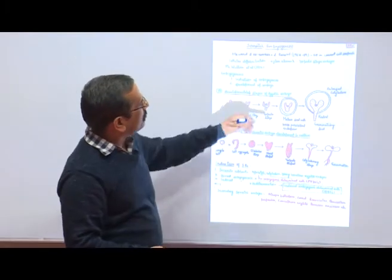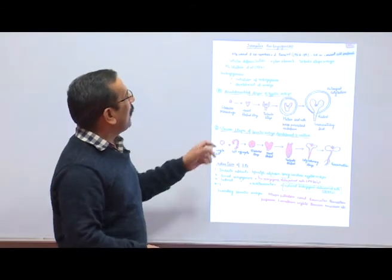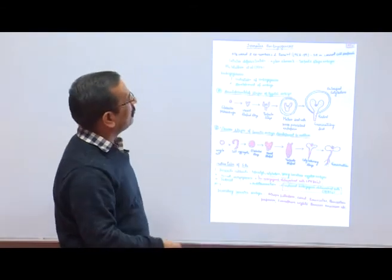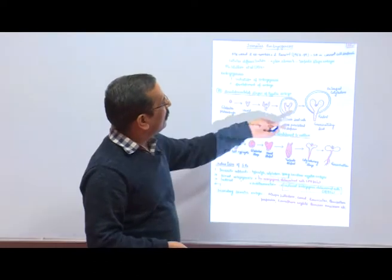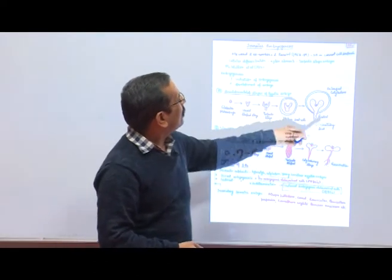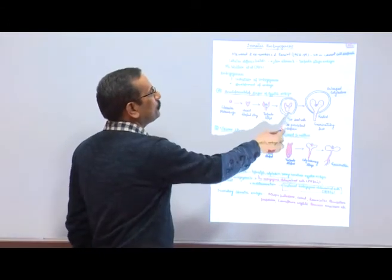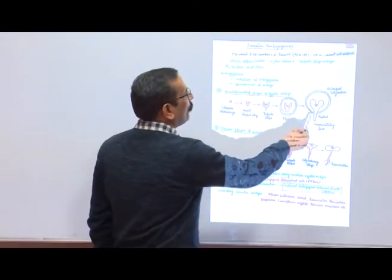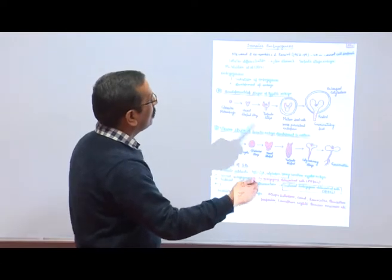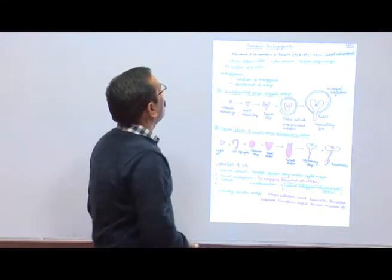Mature seeds have a persistent endosperm, and the seed germinates in the field. Germinated seeds have the endosperm, which provides nutrition for the development and germination of seeds and development of the plant.